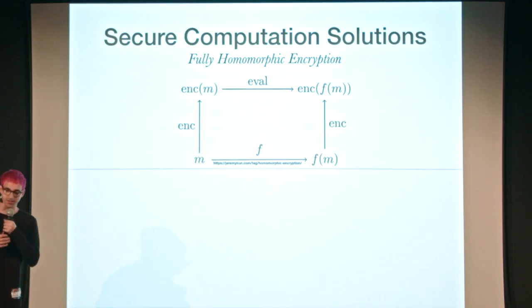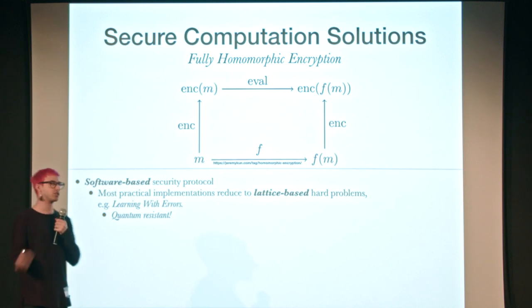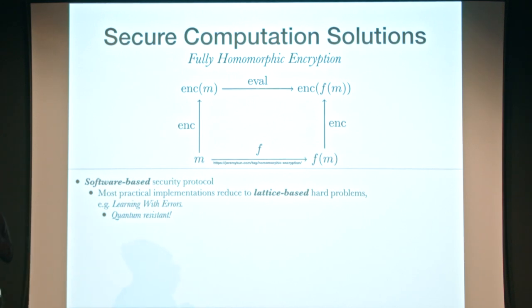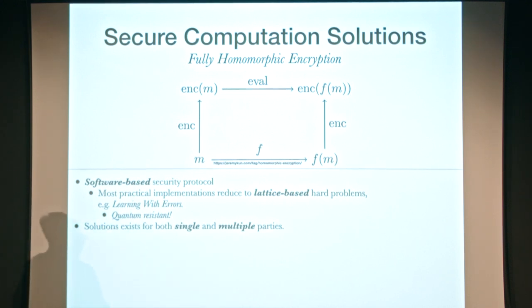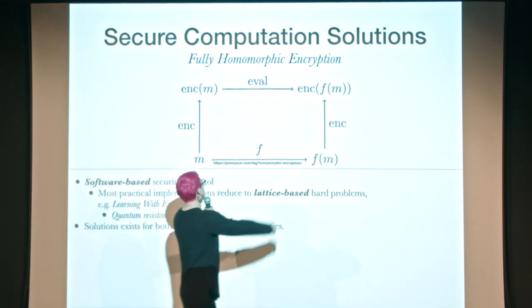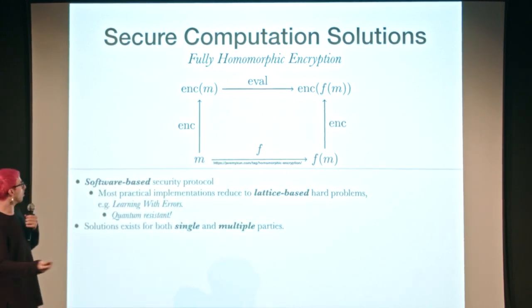Fully homomorphic encryption is a software-based security protocol. We can reduce the security to hard lattice-based cryptographic problems. The most practical implementations reduce to learning with errors, which is actually a quantum-resistant problem — so if there exists a strong quantum computer, this is incapable of being broken by it. FHE solutions exist for both single and multiple parties; when multiple parties perform the function, that would be called multi-key FHE.